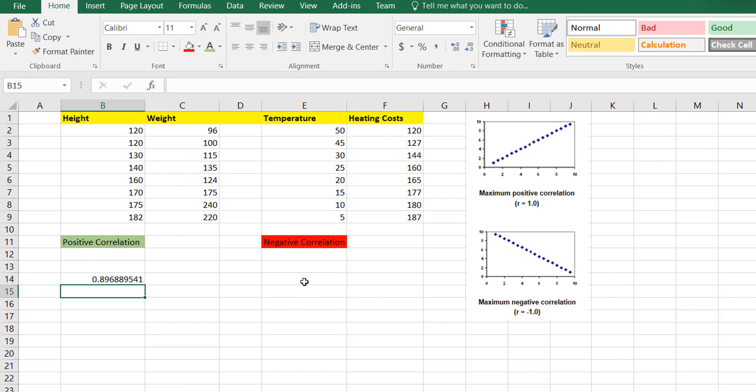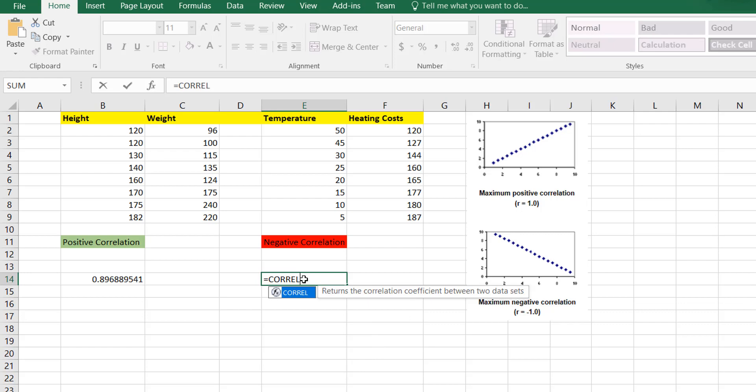Now, likewise, we can run that for the temperature and heating costs as well. So we'll put in our temperature range and then we'll put in our heating costs. And you can see we have an even stronger relationship, but this time it's a negative relationship. So it's almost a minus one, which would be perfect. So those are examples of very strong correlations - a strong positive correlation and a strong negative correlation.